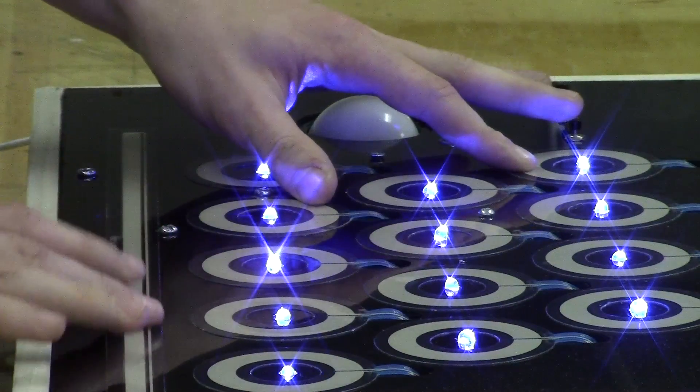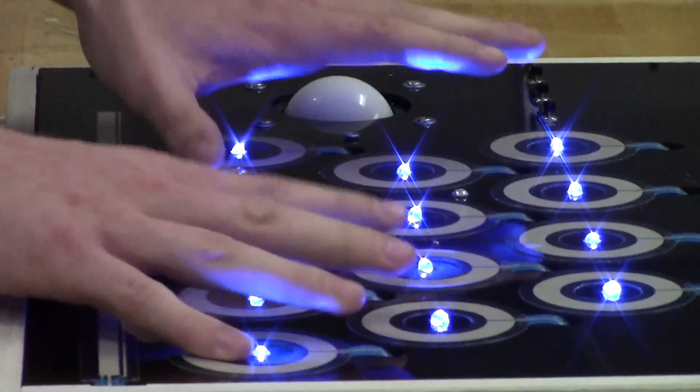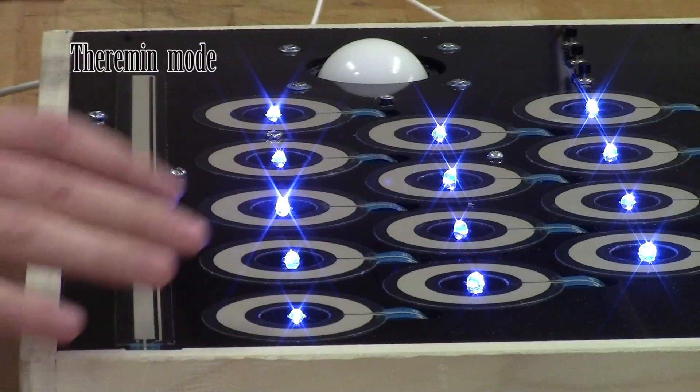The linear soft pot is overall volume, the trackball is pitch-bend, this is our theremin mode.